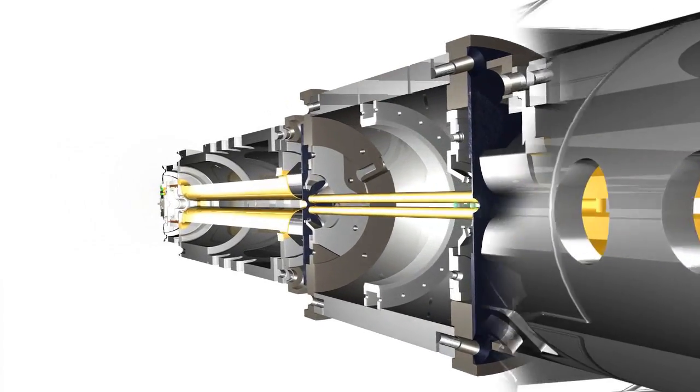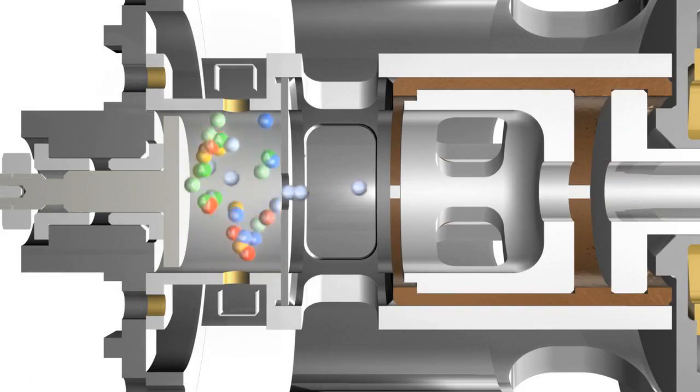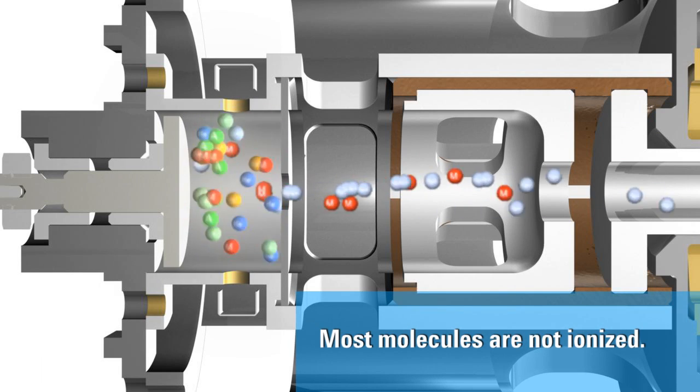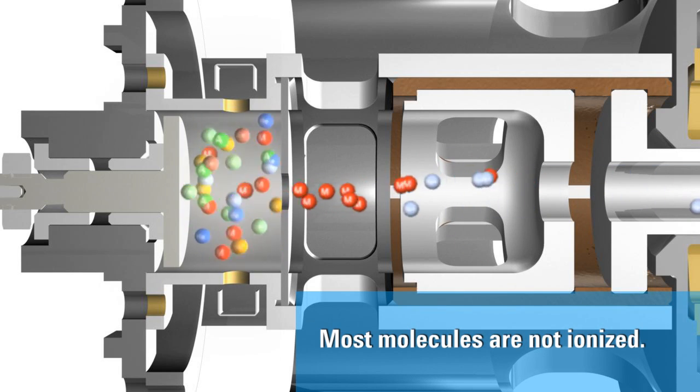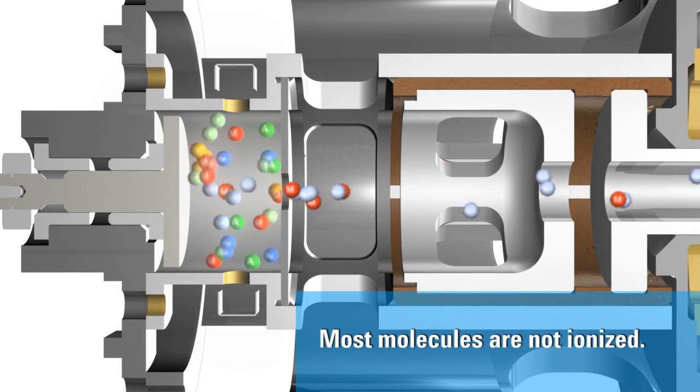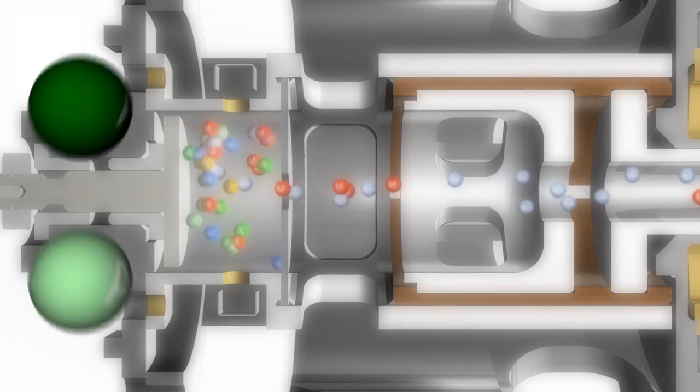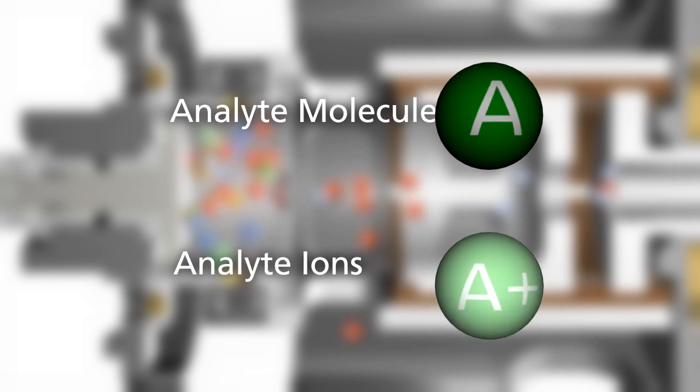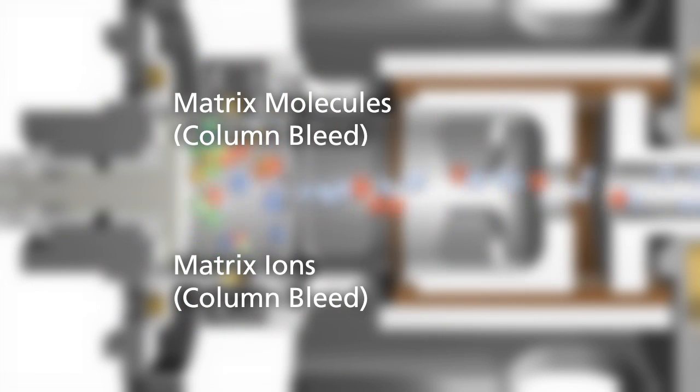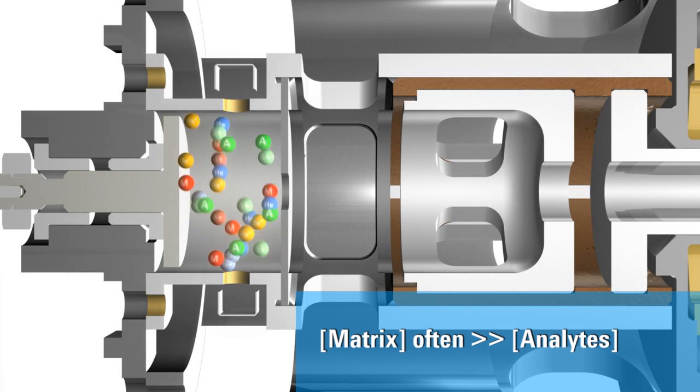But let's return to the ion source to discuss processes that are often overlooked. Even for a high-performance source, ionization efficiency as a percentage of molecules entering the source is very low. This means there are many more neutrals than ions exiting the source, so a thorough description must include analytes neutrals and ions, helium neutrals and ions, column bleed neutrals and ions, and many more neutrals and ions from the matrix at concentrations typically higher than the analyte.